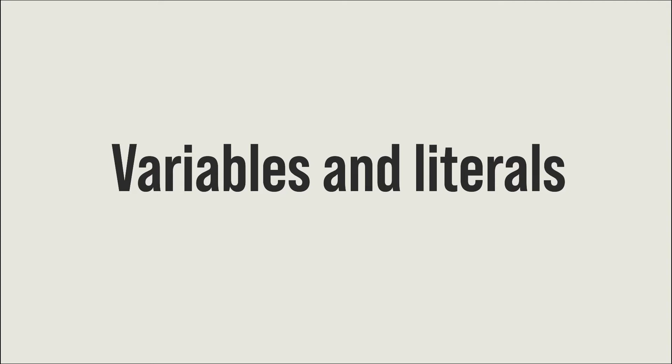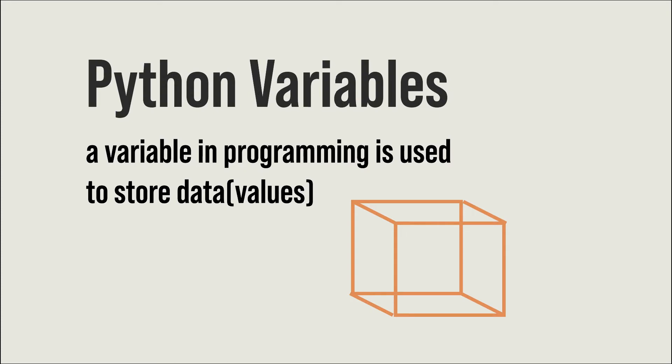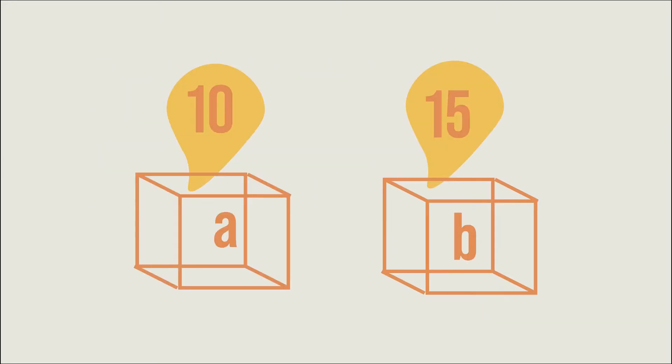Hello everyone, today we are going to understand variables and literals in Python. A variable in programming is used to store data. A variable is like an empty box or container which stores your information — for example, data like strings, numbers, characters, or floating point values.